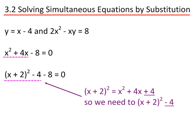From the earlier video on completing the square, we can see that we need x plus 2 all squared minus 4 to give us x squared plus 4x. Because we have 4x and we halve it, that gives us the 2. When we expand this, we get an extra plus 4, so we need to take it back off again.